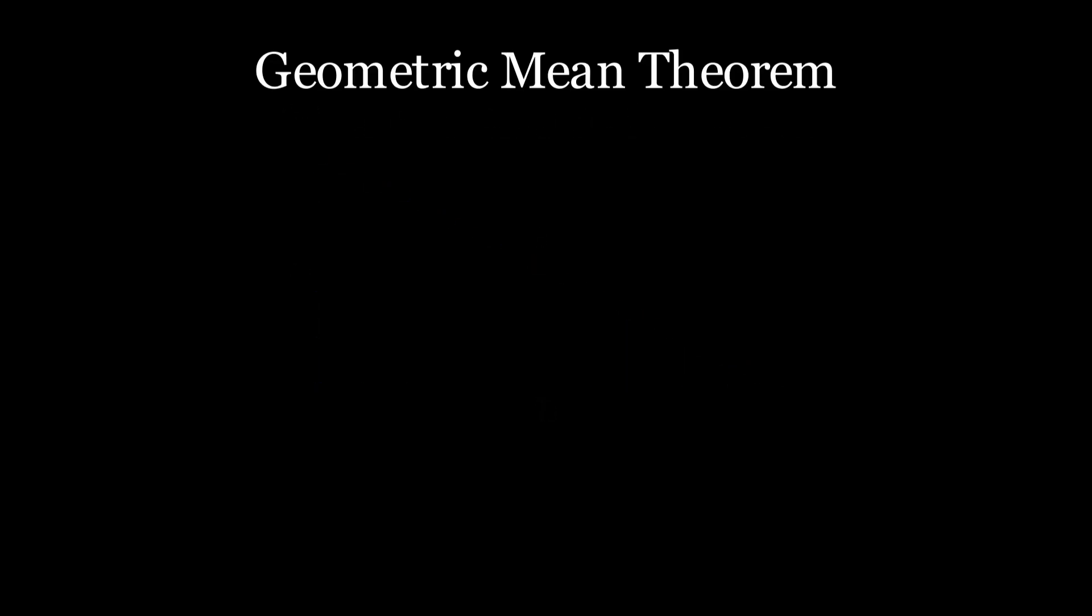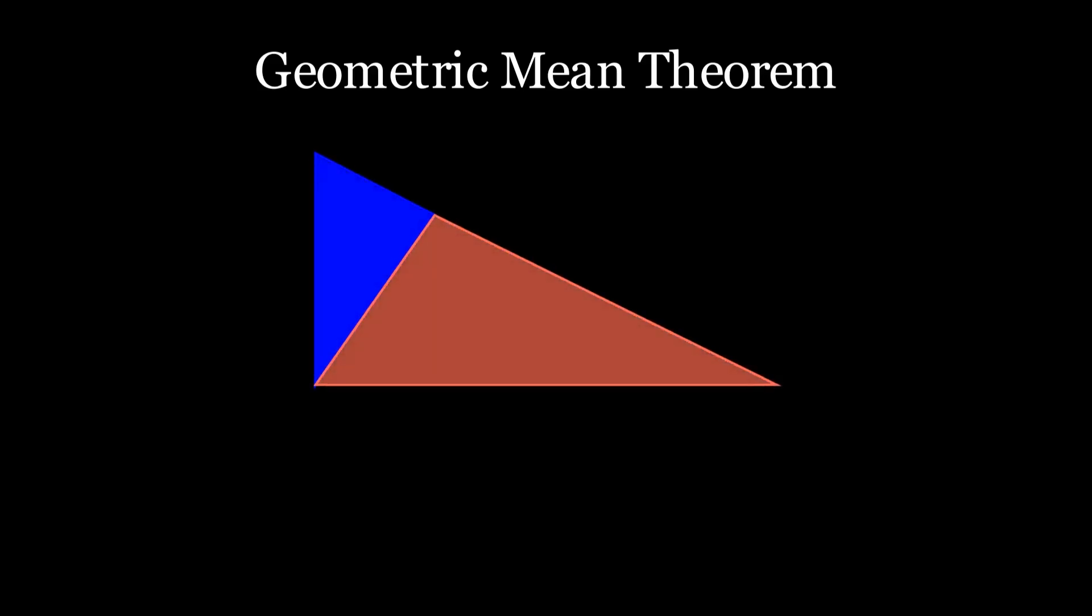First, let's redraw our triangle to include an altitude h drawn to the hypotenuse, cutting it into two pieces, c and d. The Geometric Mean Theorem states that the square root of c d equals the altitude h.